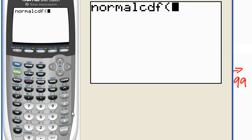My left-hand boundary is -0.99. I need to put a comma, which is above the 7. And my right-hand boundary is positive 99.